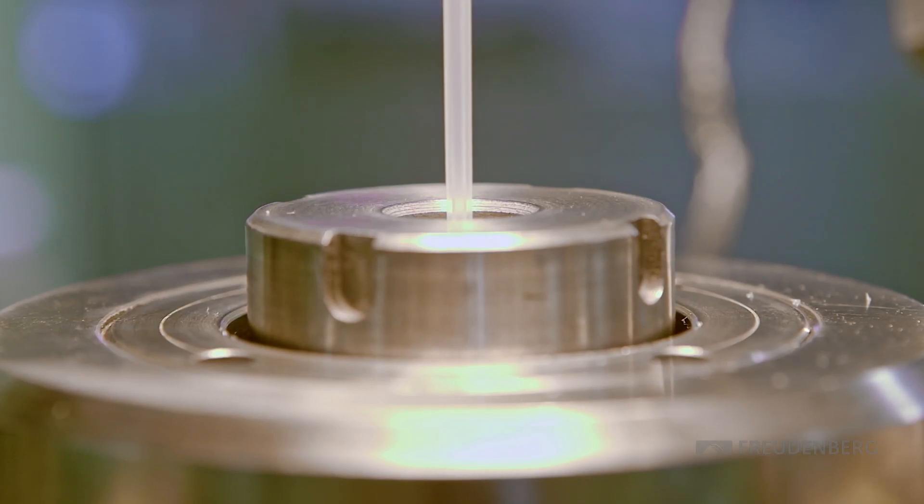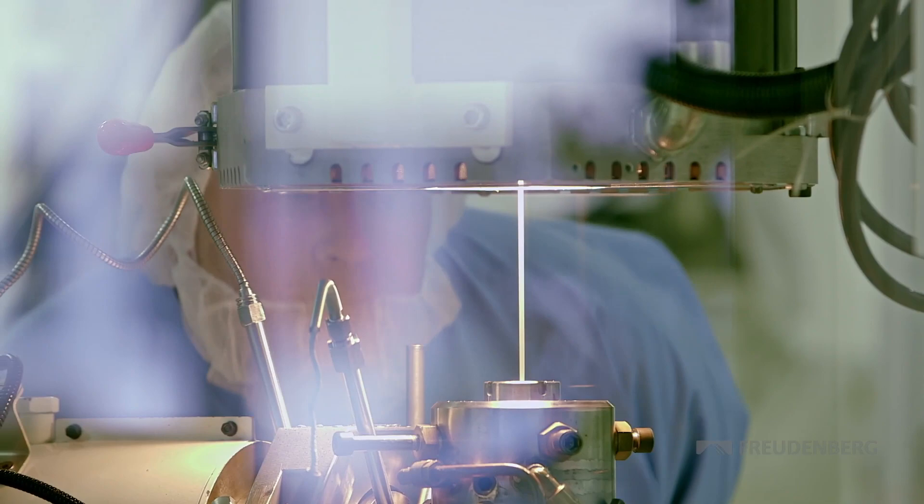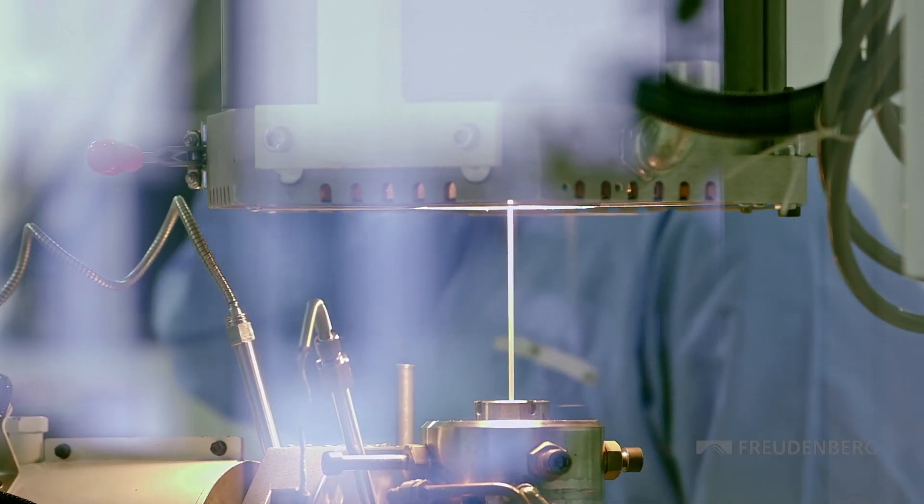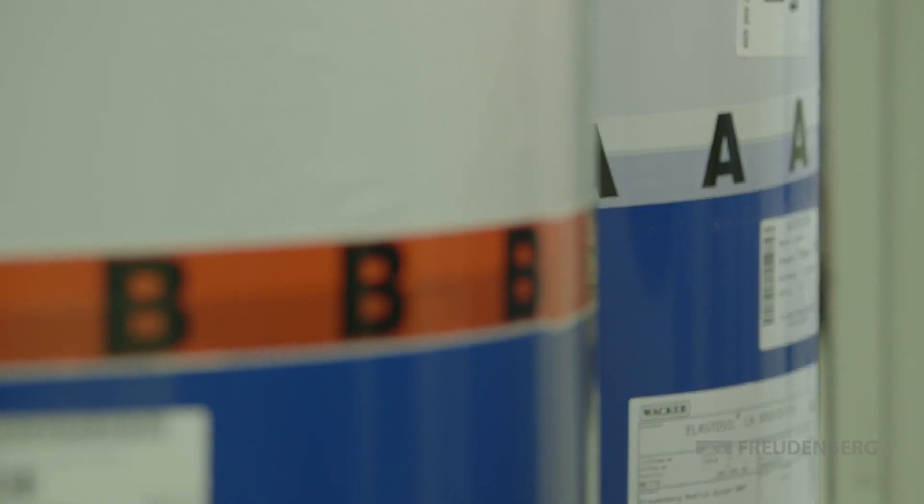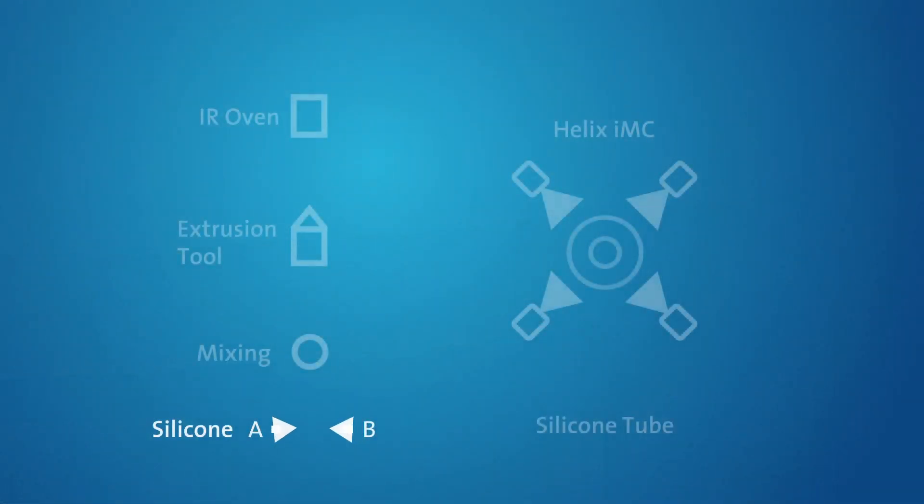But first, let's go back to the start. How is silicone tubing actually produced at Freudenberg? Silicone consists of two components which are always mixed with a great deal of material and process know-how using a specific recipe. The silicone is fed into a tool which gives the tube its desired shape. It is then cured in an oven.